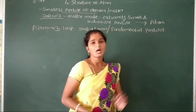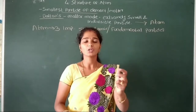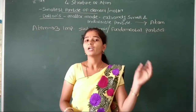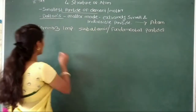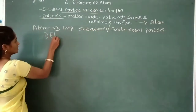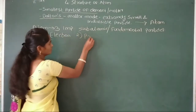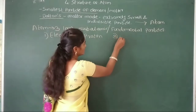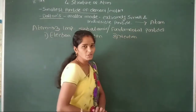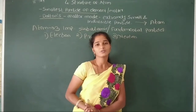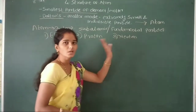So, the atom is the smallest particle, and within that atom there are 3 important sub-atomic particles. These 3 sub-atomic particles, or fundamental particles of atom, are: 1st — electron, 2nd — proton, and 3rd — neutron.